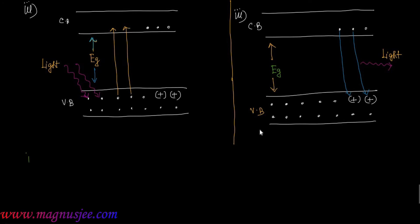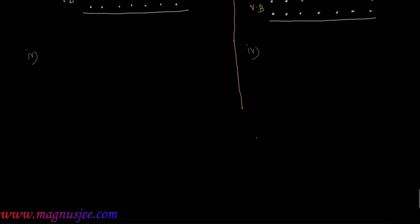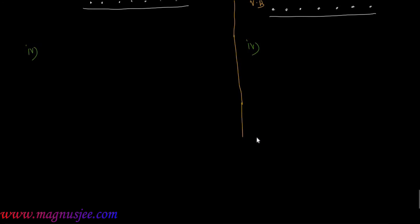Difference number four: the circuit diagrams of photodiode and LED — these are also important questions. On the left hand side we have the photodiode circuit, and on the right hand side we have the LED circuit.